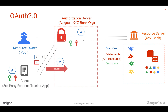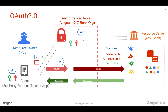Apigee verifies the access token. If the access token is valid, it forwards the request to the resource server. The resource server gives back the response to the client application, where you can see information like your expense reports in the mobile application.